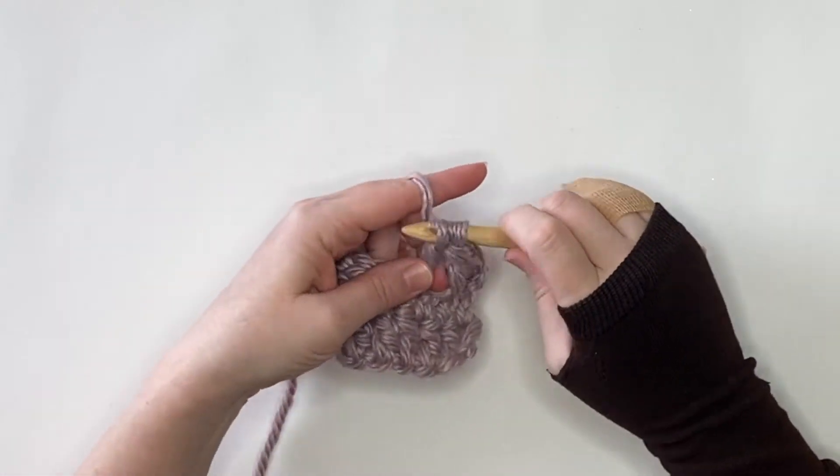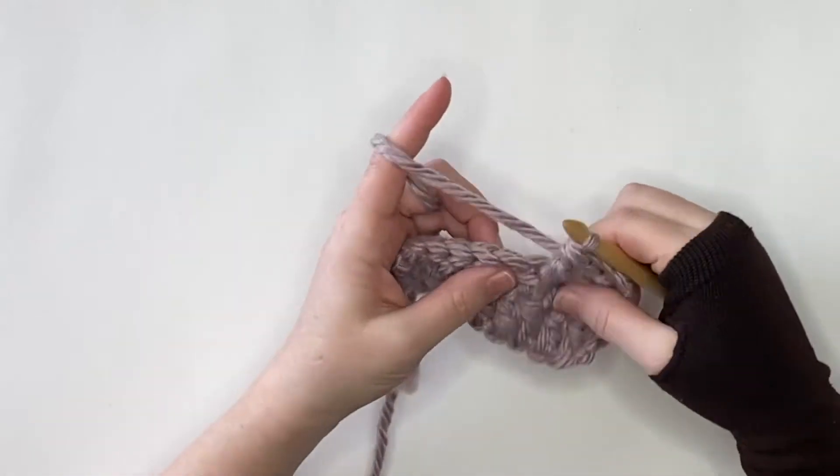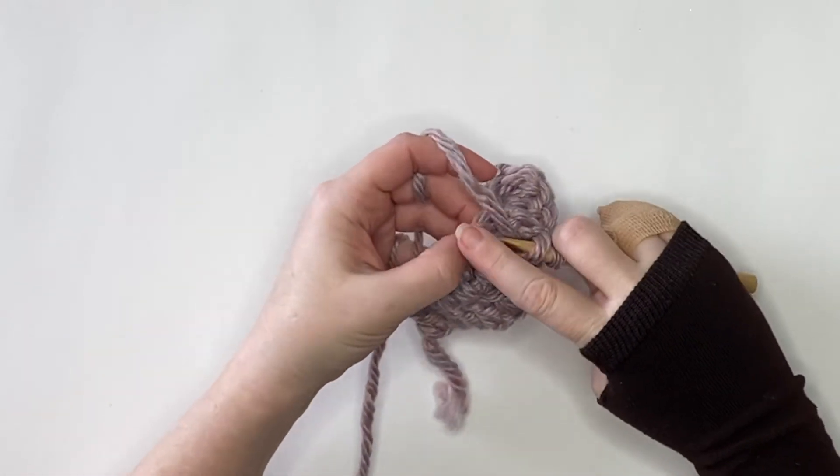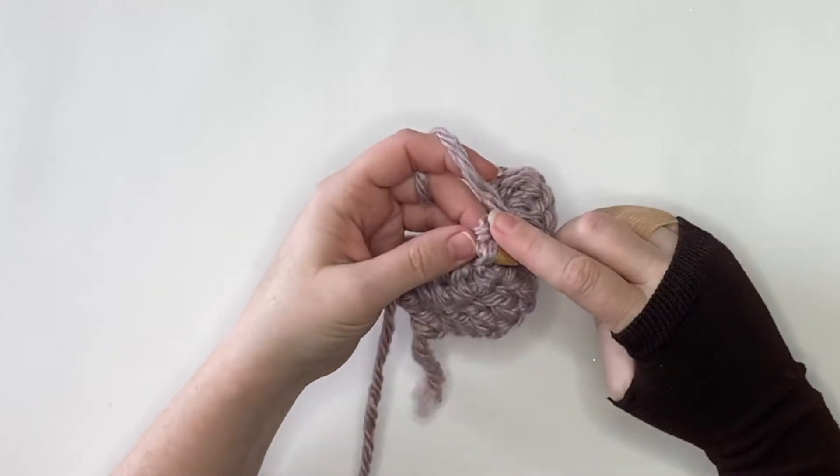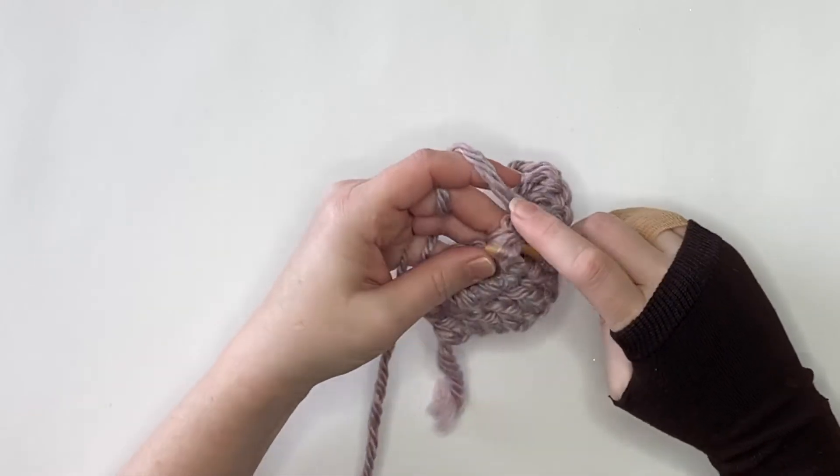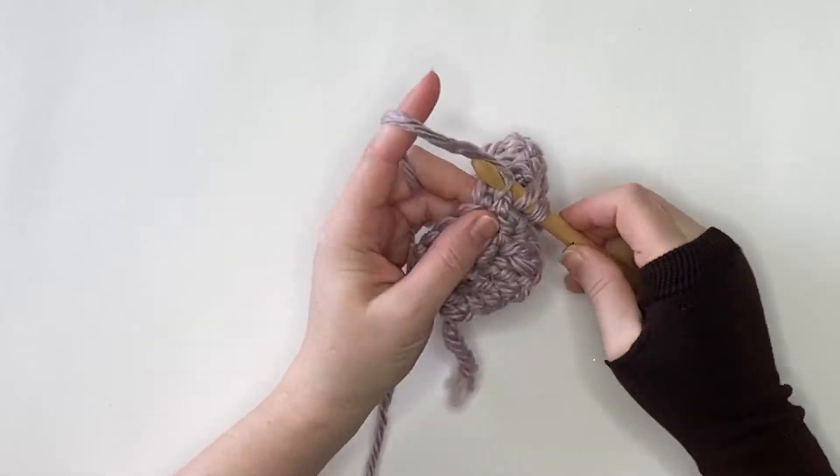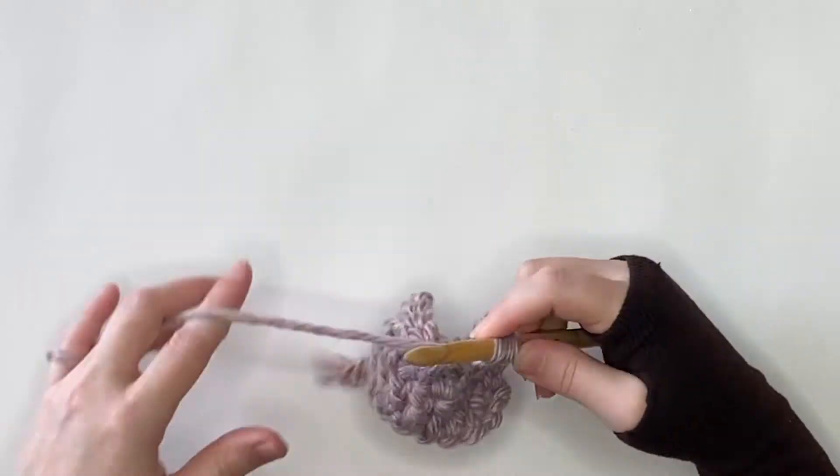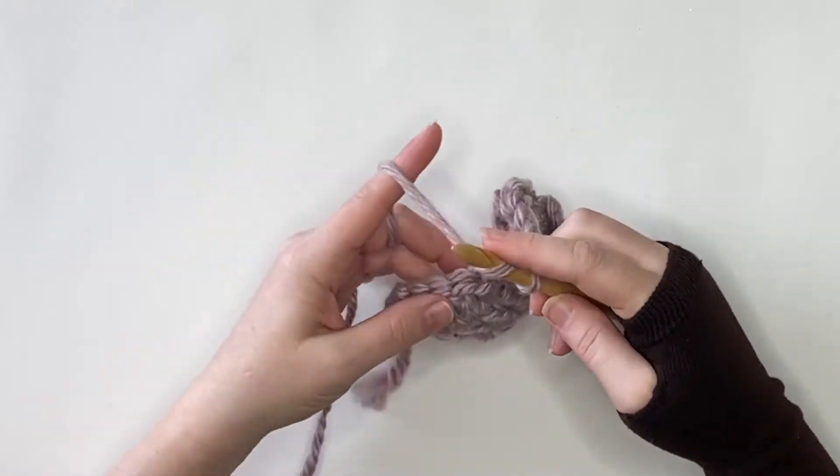You can see there, I kind of slowed it down so you can see, and we'll do this again so you can see exactly where I'm putting it. We're putting it just below where you would normally put it. It's not a front post, not a front loop only—it's a third loop. You can see there, and then it's worked just like a regular standard double crochet.